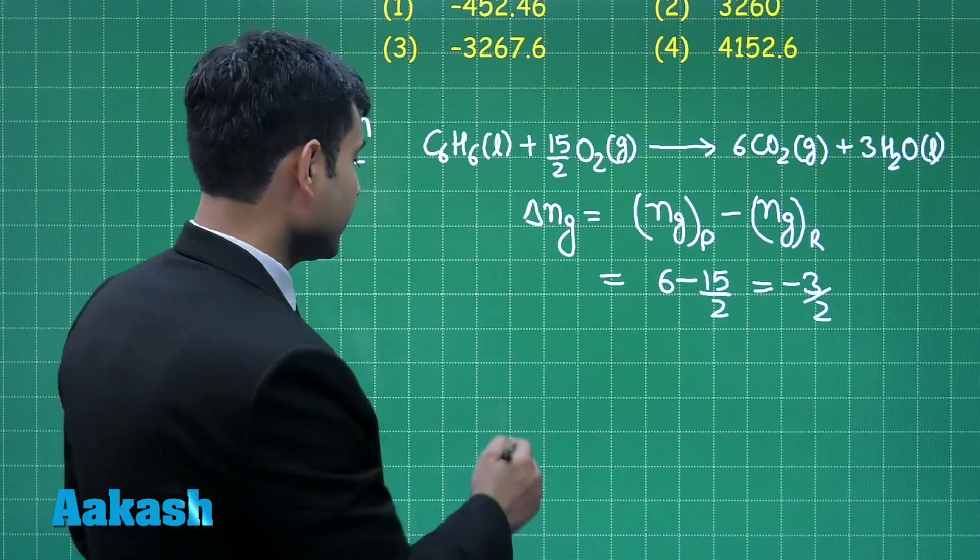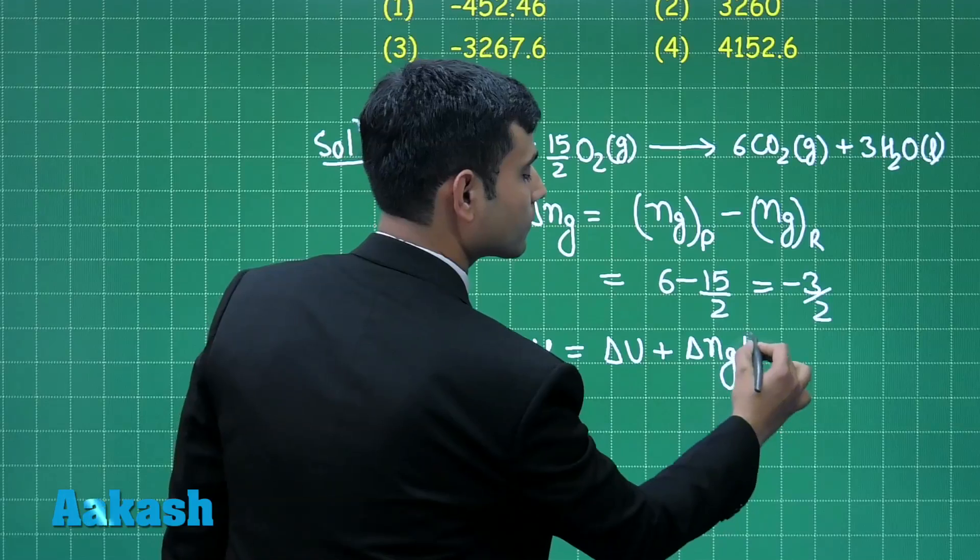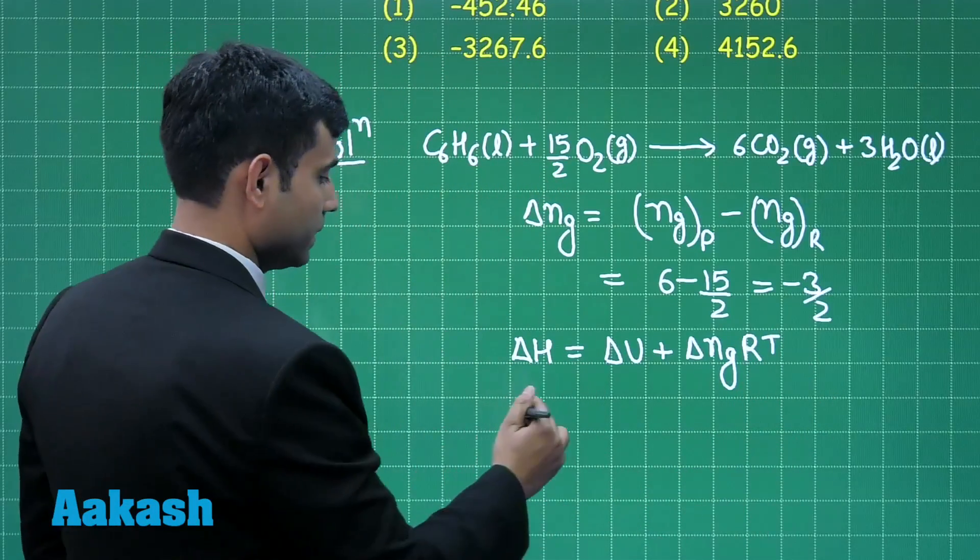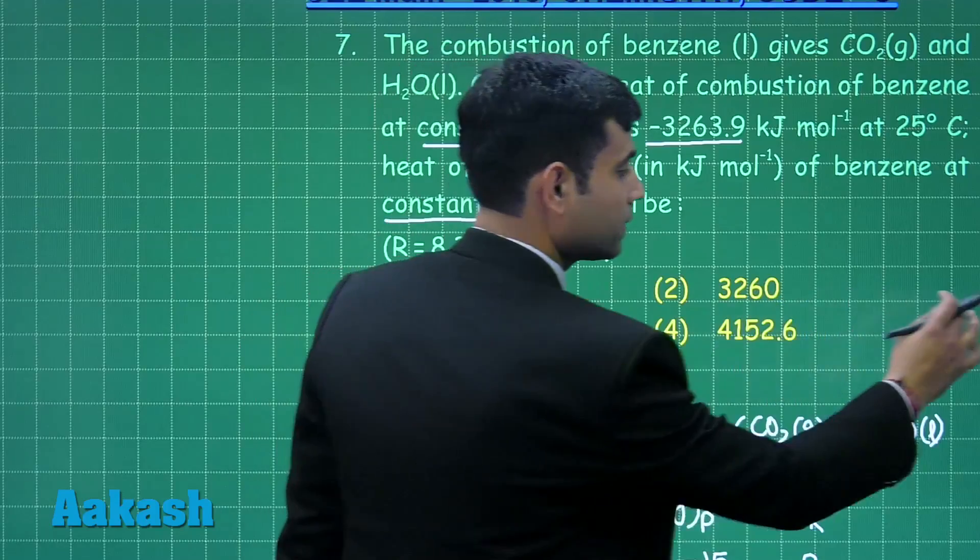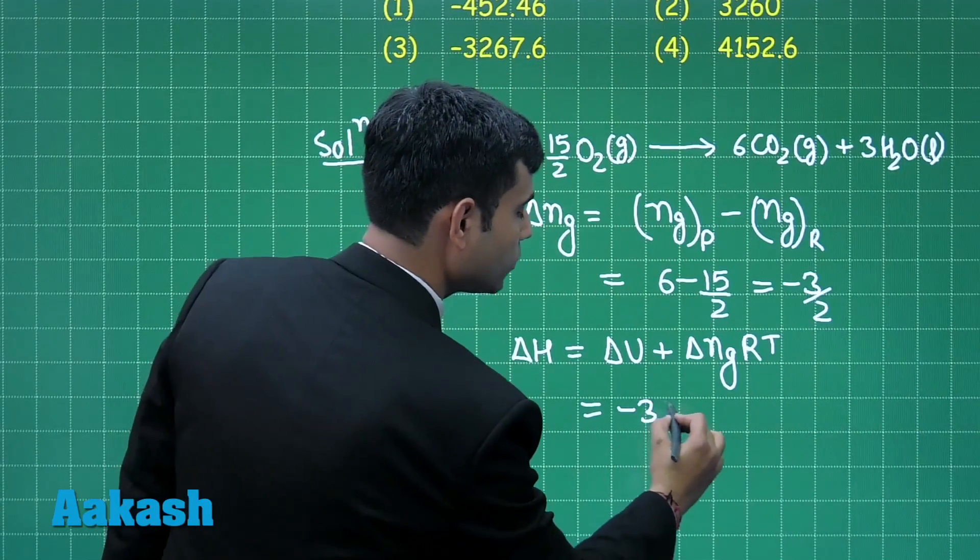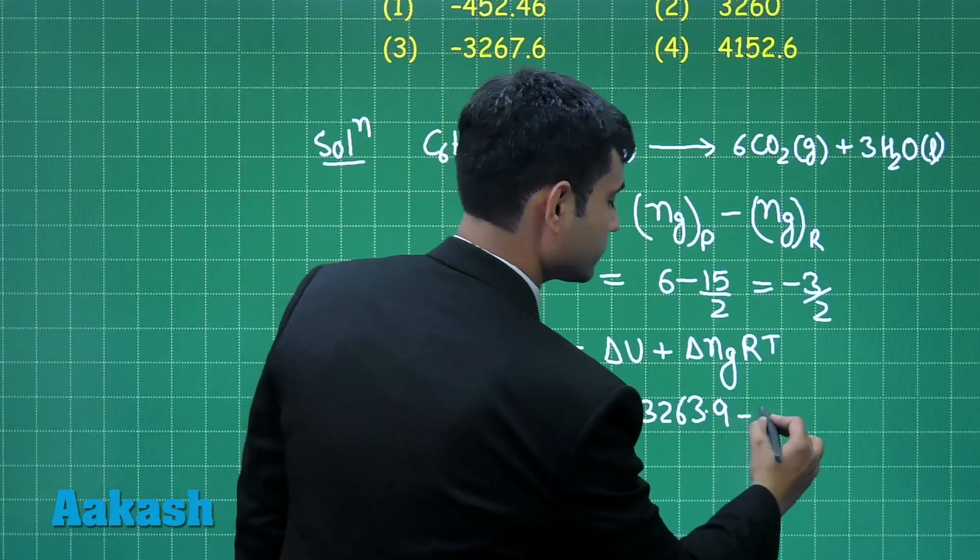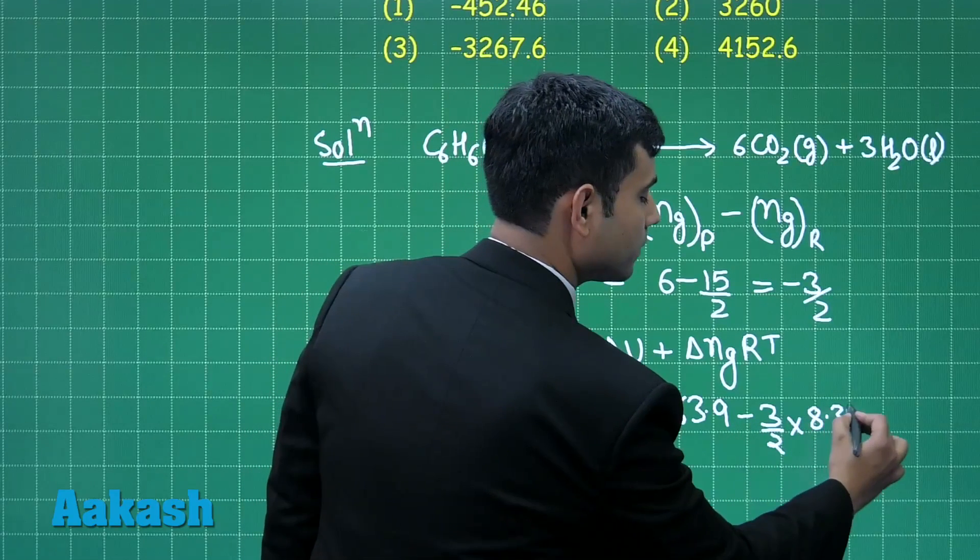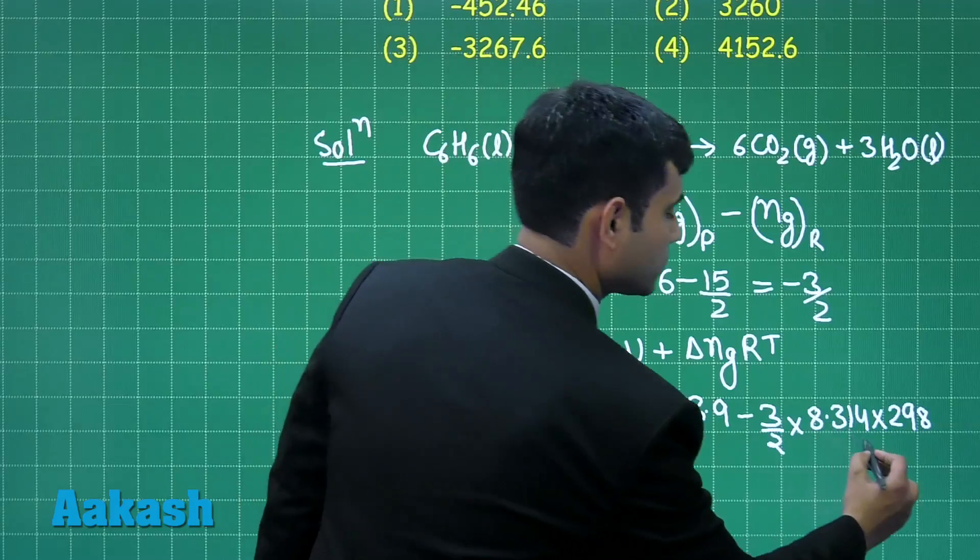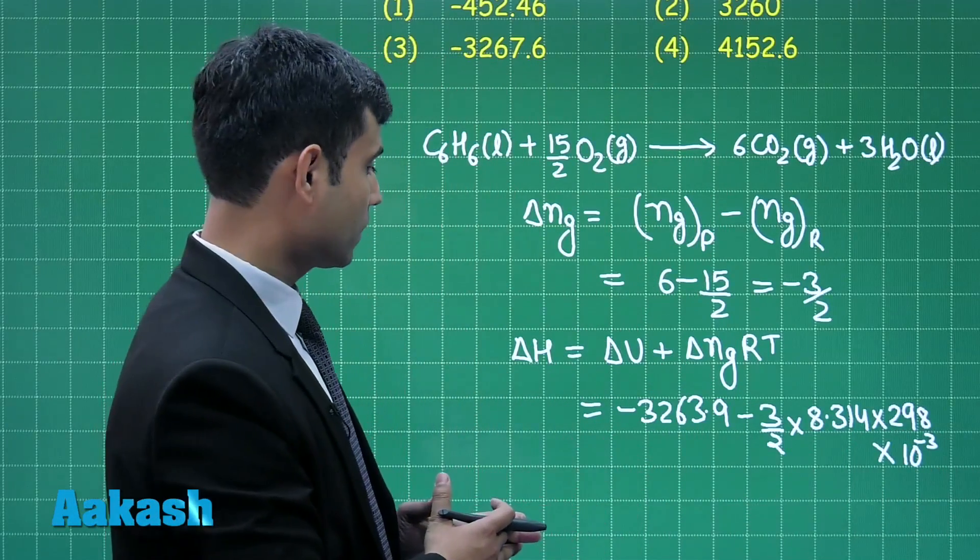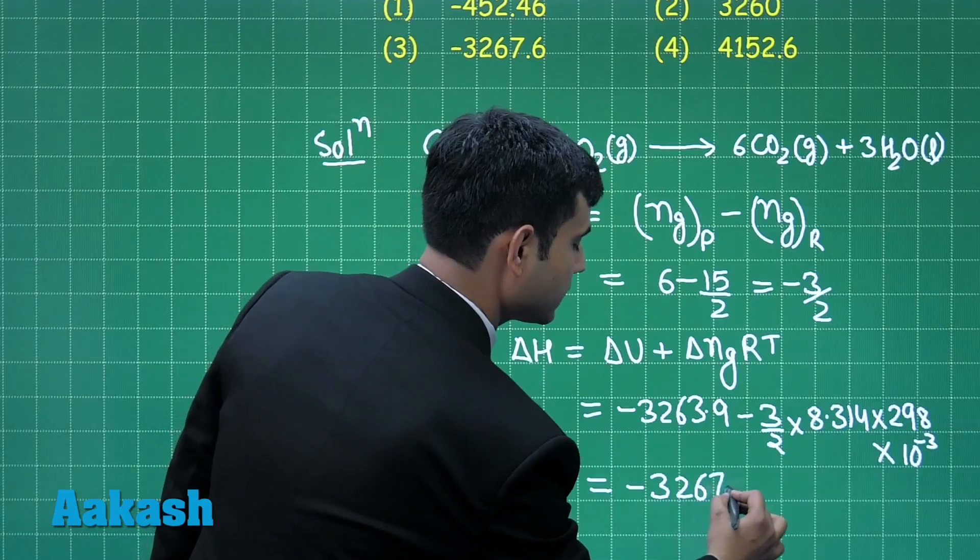Now, as we know delta H equals delta U plus delta NG RT. We can put the values. The value of delta U is –3263.9 in kilojoule. Delta NG is minus 3 by 2. The value of R is 8.314 and temperature is 298 Kelvin. We will multiply this by 10 to the power minus 3 in order to convert it into kilojoule. On solving, it will give us the answer minus 3267.6 kilojoule.